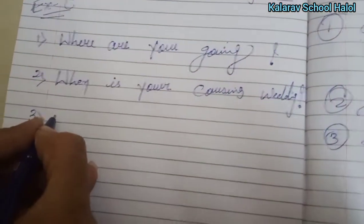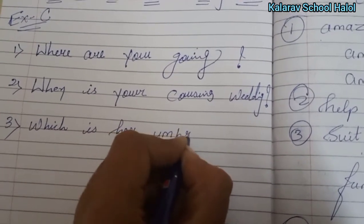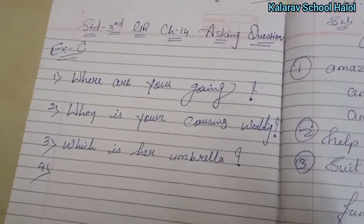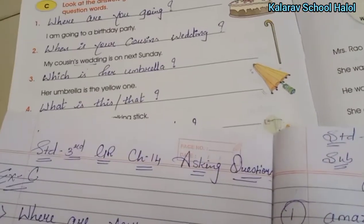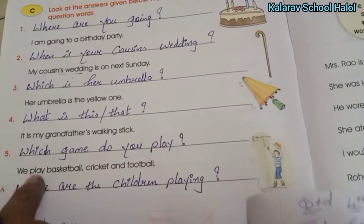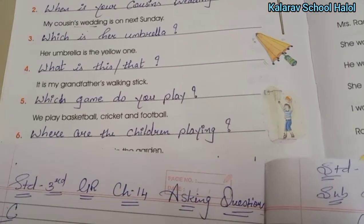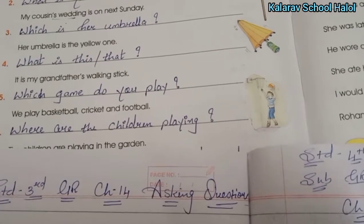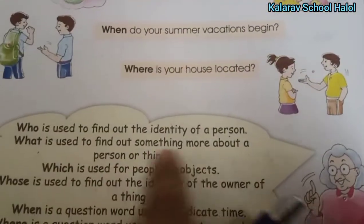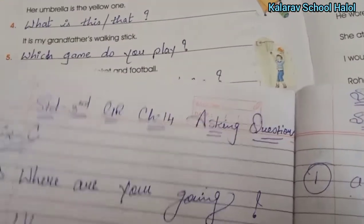Which is her umbrella? — so we can find out which umbrella it is. We came to know that the umbrella is an object, so for that we used 'which.' This tells us what color the umbrella is. Next, number four: It is my grandfather's walking stick. The stick belongs to grandfather. Now if we want to know more about a person or a thing, we use 'what.'